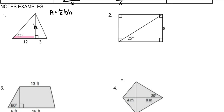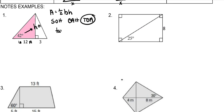To solve for the height, we're going to focus on just the left-hand triangle by itself. We're not going to worry about the right one yet, even though that is part of the whole triangle we're trying to figure out. To find the height, we focus on the pink triangle. This side is opposite, and this is adjacent. Opposite and adjacent is tangent. So the tangent of 42 equals H over 12. Multiply both sides by 12, and you get 10.8 for the height.